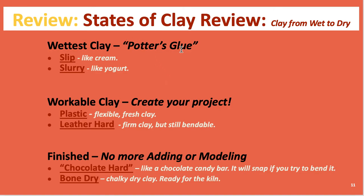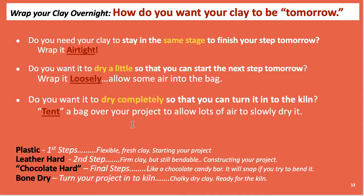Here are your states of clay. The potter's glue is slip and slurry. Workable clay is plastic clay fresh out of the bag; leather hard is still bendable. When clay becomes chocolate hard — like a candy bar that snaps when you break it — you're done; you can only carve and sand from there. Bone dry clay is when we put it in the kiln. For wrapping: wrap airtight to stay in the same stage, wrap loosely to advance to the next stage, and tent it to dry completely.